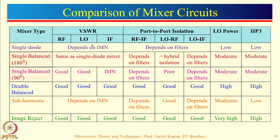VSWR depends on the impedance matching networks used in various mixer circuits, and for some configurations we use couplers as the input device for RF and LO. For single diode mixers there are no coupling structures, so all three port VSWRs depend on the impedance matching network. For single balanced mixers using a 90 degree hybrid coupler, we get a good VSWR for RF and LO ports — this is an inherent property of the 90 degree coupler. For double balanced mixers we use couplers, so we have good VSWR. Sub-harmonic mixers have no coupling structures. Image reject mixers use coupling structures, giving good VSWR at all three ports.